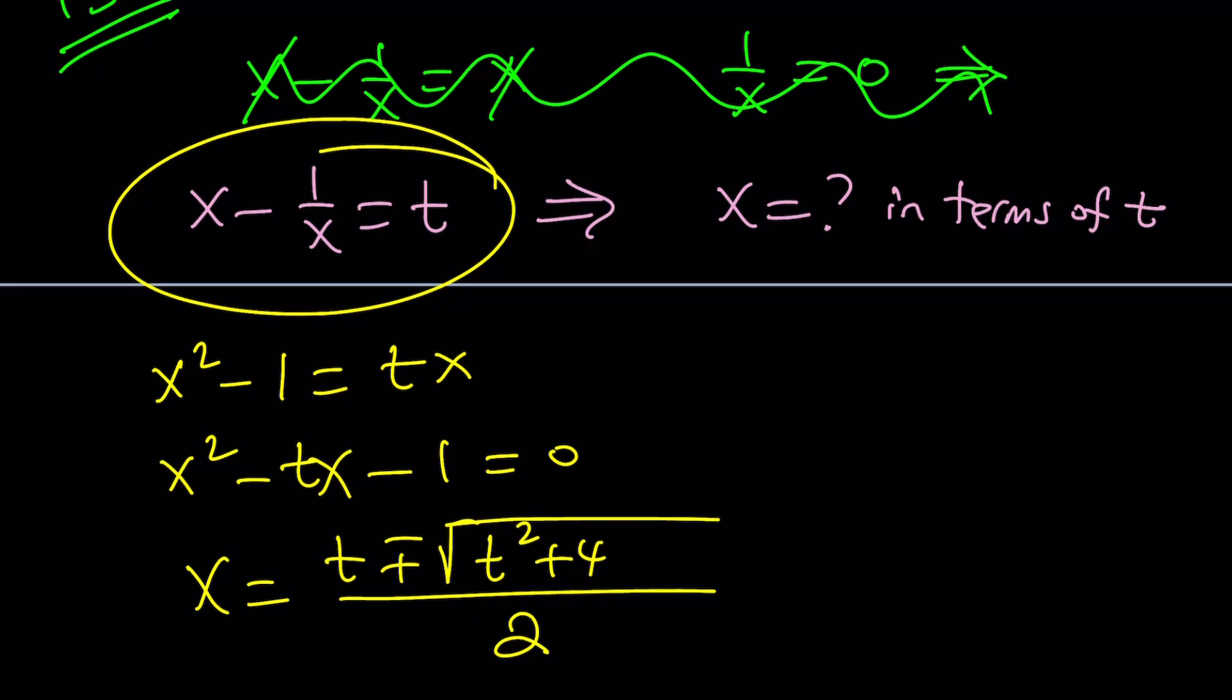All right, that radical is too long. Let's make it a little shorter, like this. Now, we can basically plug this in, right? Because now we've got x in terms of t.